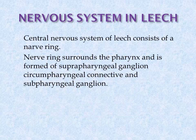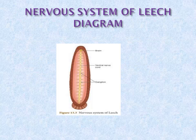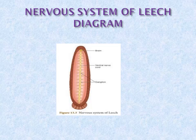Then the nervous system of leech. The central nervous system of leech consists of a nerve ring that surrounds the pharynx and forms the suprapharyngeal ganglion. Both ends of the pharyngeal ganglion are connected by circumpharyngeal connectives. You can see this in the picture. The brain is located just above the pharynx.